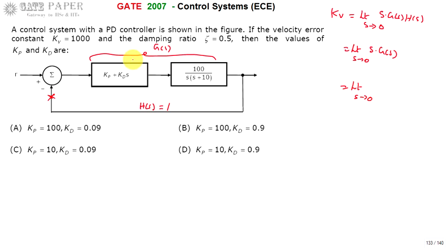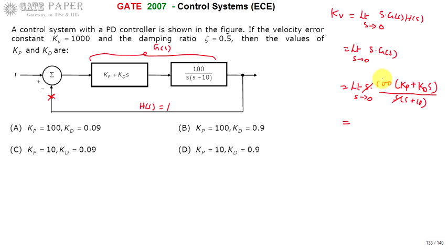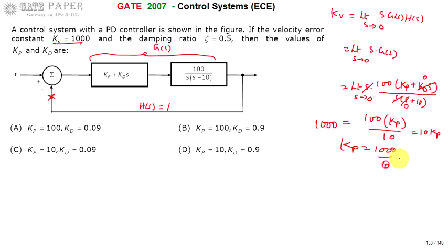Taking the limit as S tends to 0 of S into G(S): we have 100 times (Kp plus Kd·S) in the numerator. The S in the numerator cancels with the S in the denominator. Substituting S equals 0, the Kd·S term becomes 0, giving 100·Kp divided by 10. This equals 1000, so 10·Kp equals 1000 divided by 10, giving Kp equal to 100.